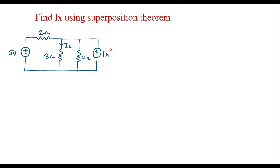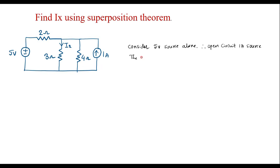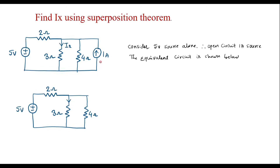As we know in superposition theorem, we are supposed to consider one source at a time. Let us consider the 5-volt source alone. In that case, we are supposed to open-circuit the 1-amp source. The equivalent circuit is shown below. Here I have open-circuited the 1-amp source. Now assume that the current through the 3-ohm resistor is I1.